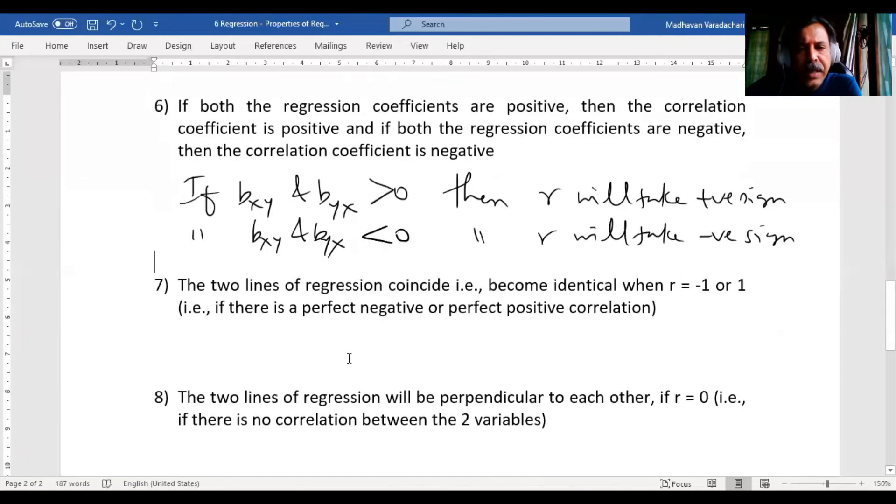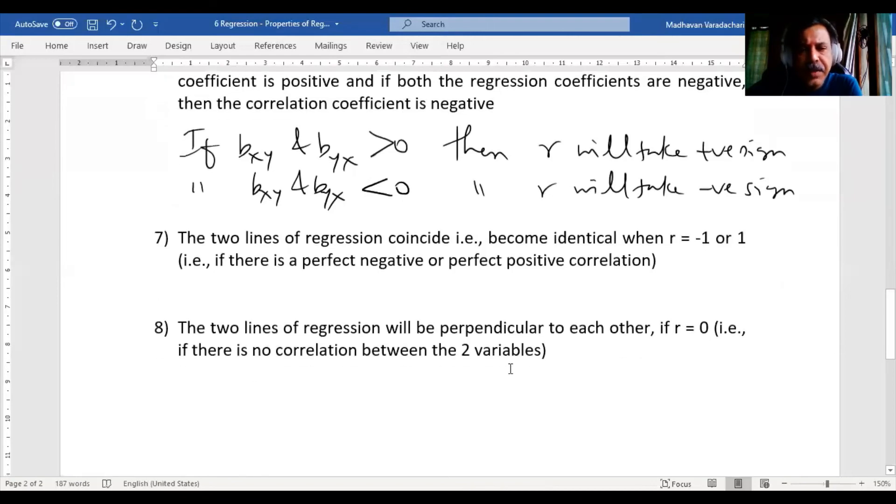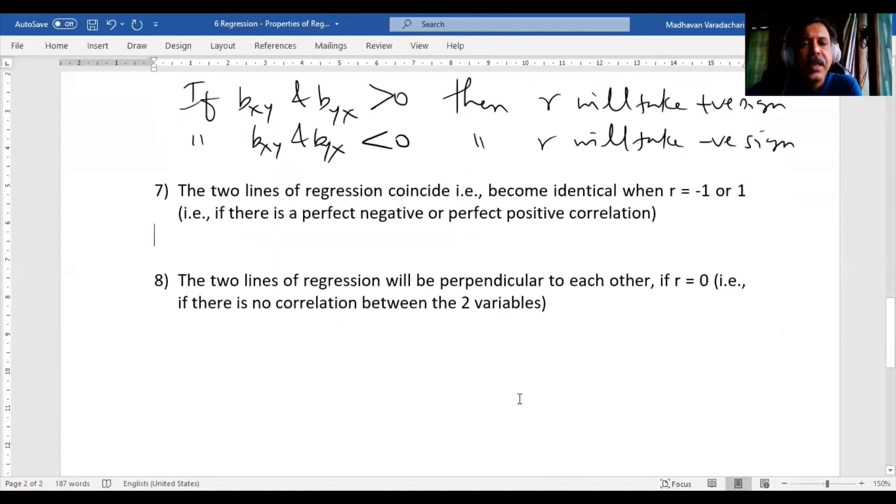Then, the two lines of regression coincide—that is, become identical—when r is -1 or +1. If there is a perfect negative or perfect positive correlation, then the lines will coincide with each other, meaning one will be over the other. Similarly, the two lines of regression will be perpendicular to each other if r = 0, that is, if there's no correlation between the two variables. So these are the different properties of regression coefficients or regression lines.